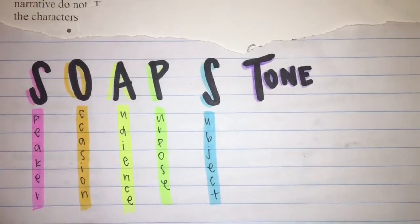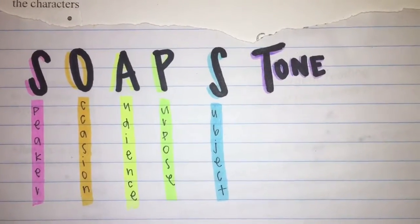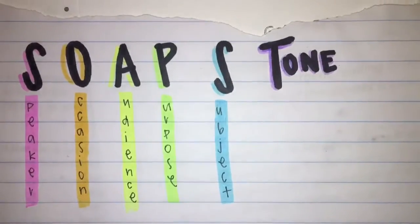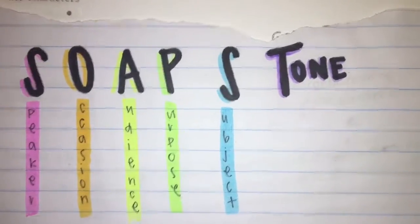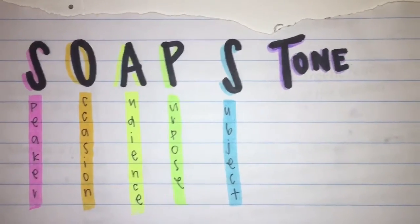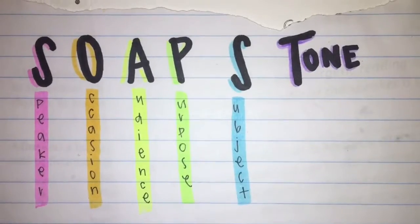Okay, so for this poem, Dover Beach by Matthew Arnold, we're going to annotate and analyze the poem using SOAPSTONE, and in case any of you forgot, the S is for speaker, O is for occasion, A is for audience, P is for purpose, S is for subject, and then tone.